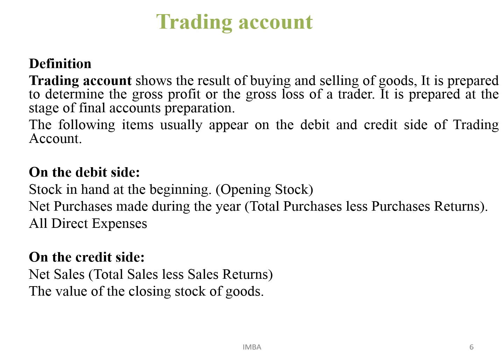Now we will discuss what is a trading account. A trading account shows the result of buying and selling of goods. It is prepared to determine the gross profit or gross loss of a trader and is prepared at the stage of final account preparation. On the debit side, we show all the direct expenses, because it is a nominal account — that is why all expenses are shown on the debit side. All the incomes which are directly incurred from the operations of the business are shown on the credit side of the trading account.